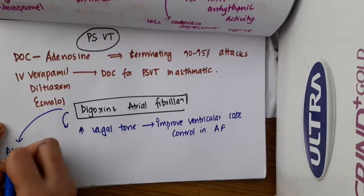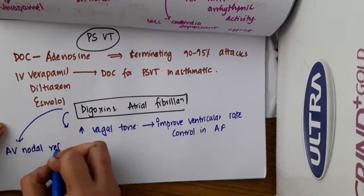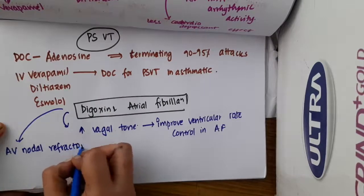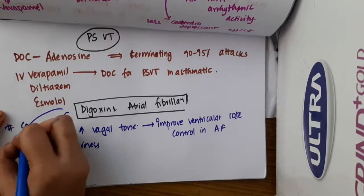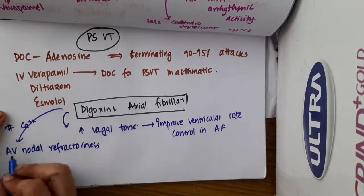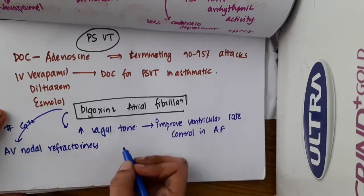Digoxin mainly increases the atrioventricular nodal refractoriness. How does it increase AV nodal refractoriness? By causing calcium blockade, thus causing AV refractoriness.